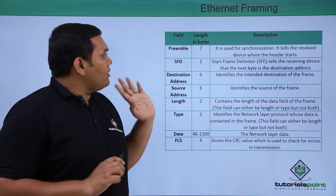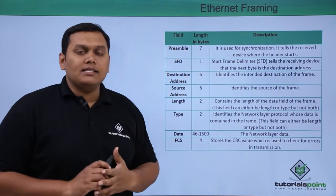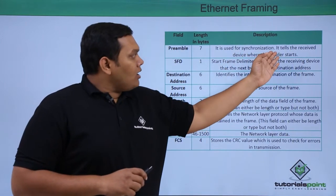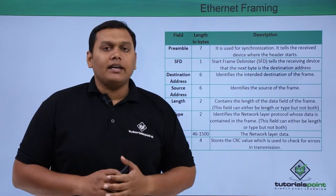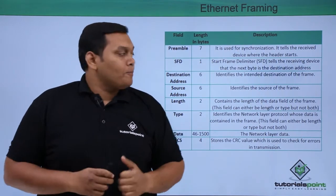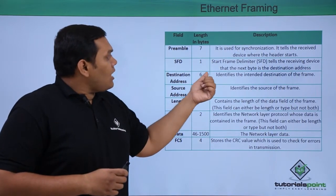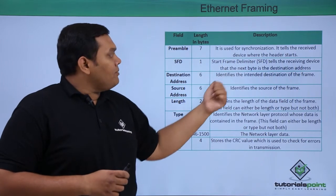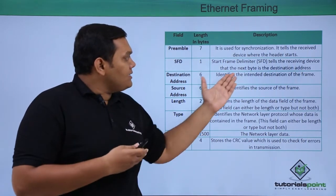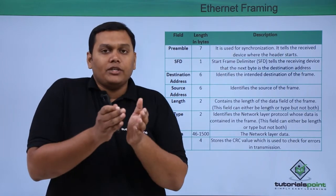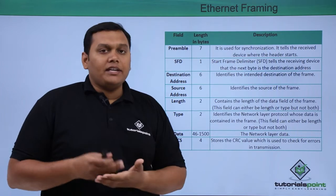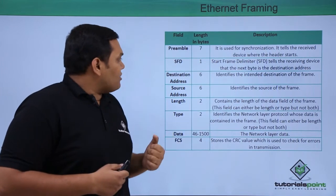The Preamble is 7 bytes in length and is used to synchronize and tell the receiving device where the header starts and where the interaction of the frame begins. The SFD (Start Frame Delimiter) tells the receiving device that the next byte is the destination address.